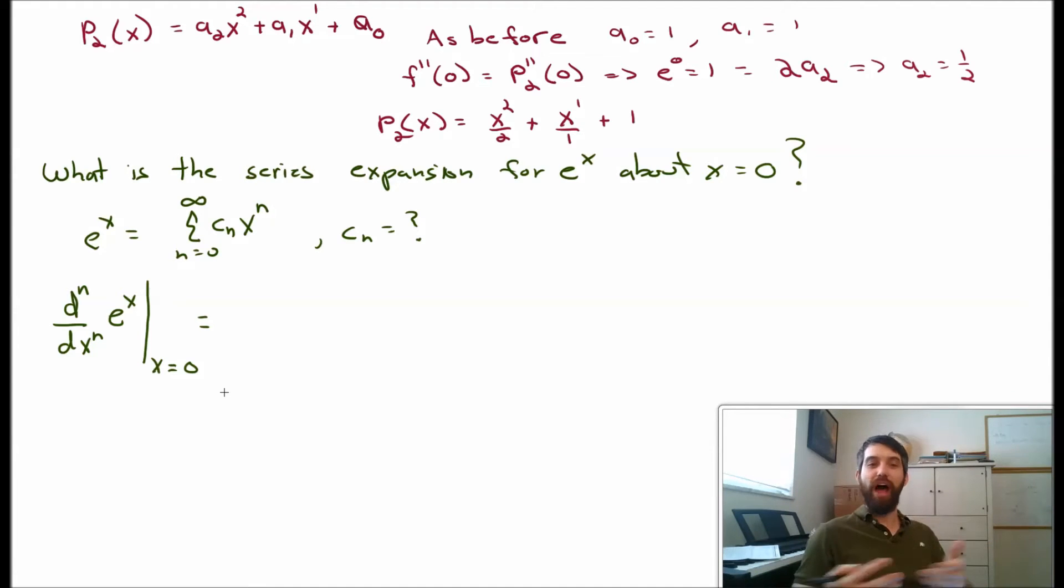all the ones with powers less than x^n are going to go to 0. If I take five derivatives and I've got an x^4 term, it goes to 0. The x^3 term goes to 0.